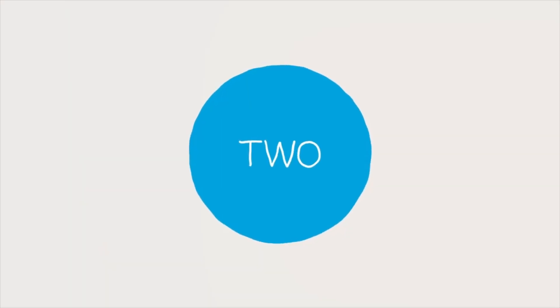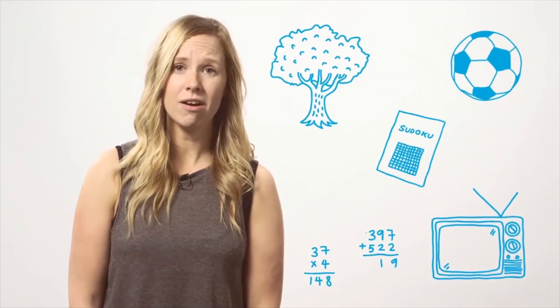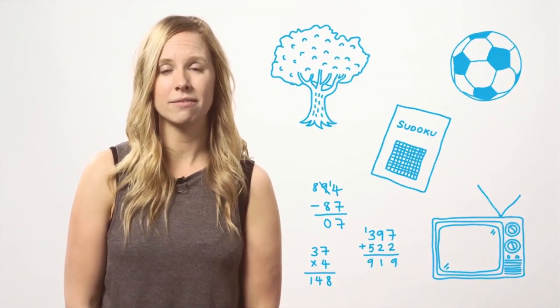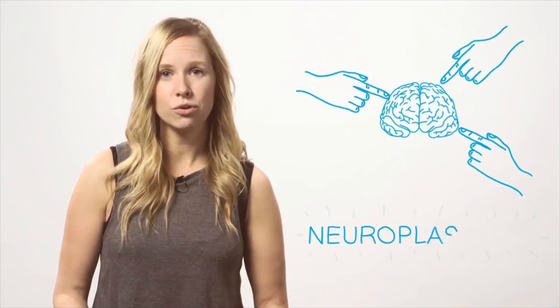Your brain consists of billions of special cells called neurons that talk to each other by connections known as neural pathways. The neural pathways in your brain keep changing and growing your whole life depending on your environment and how you use your brain. This is known as neuroplasticity.